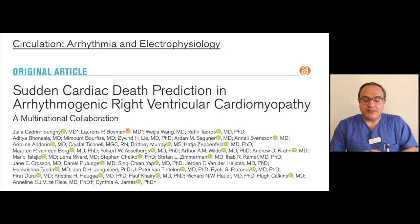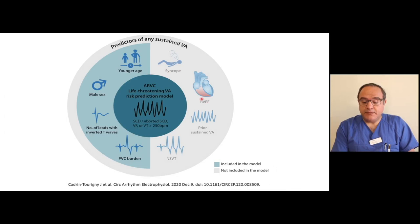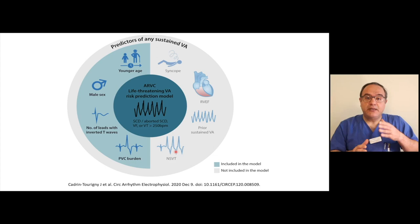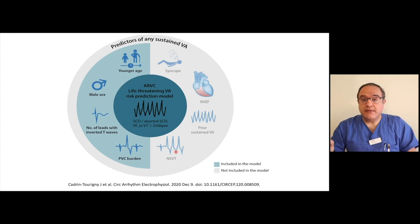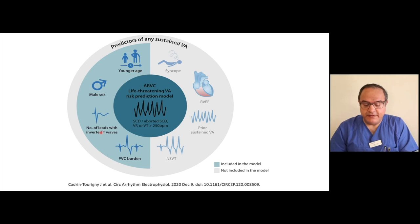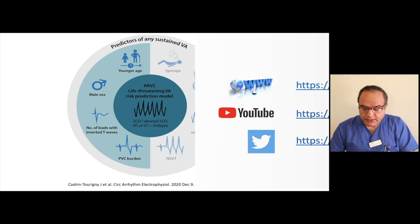Before finishing, I would like to introduce an interesting study on prediction of sudden cardiac death in patients with arrhythmogenic cardiomyopathy. We know that syncope, reduced right ventricular ejection fraction, prior sustained ventricular arrhythmia, and non-sustained VT are predictors of ventricular arrhythmia. However, this large study showed these parameters do not predict sudden cardiac death or life-threatening ventricular arrhythmia. Instead, younger age, male gender, number of leads with T-wave inversion, and PVC burden were predictors of sudden cardiac death.